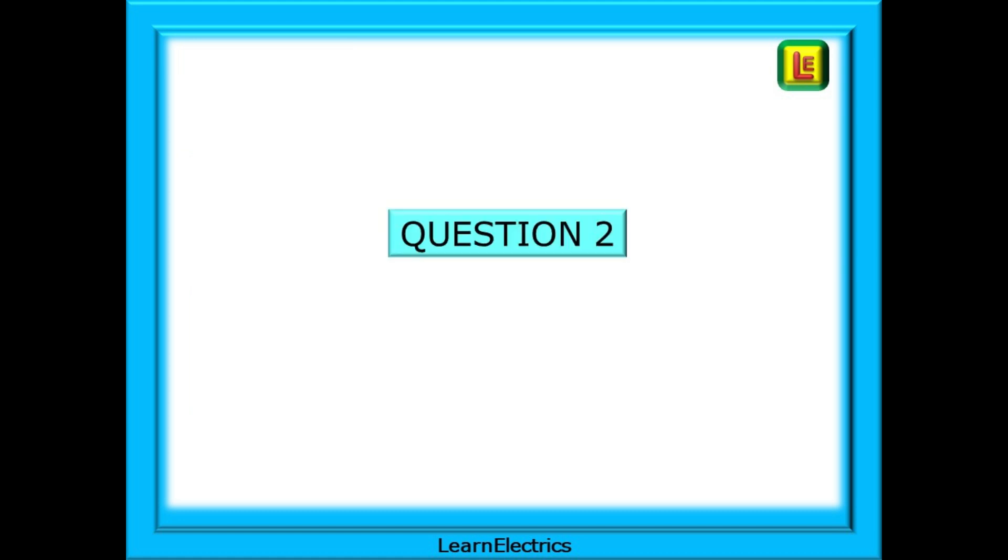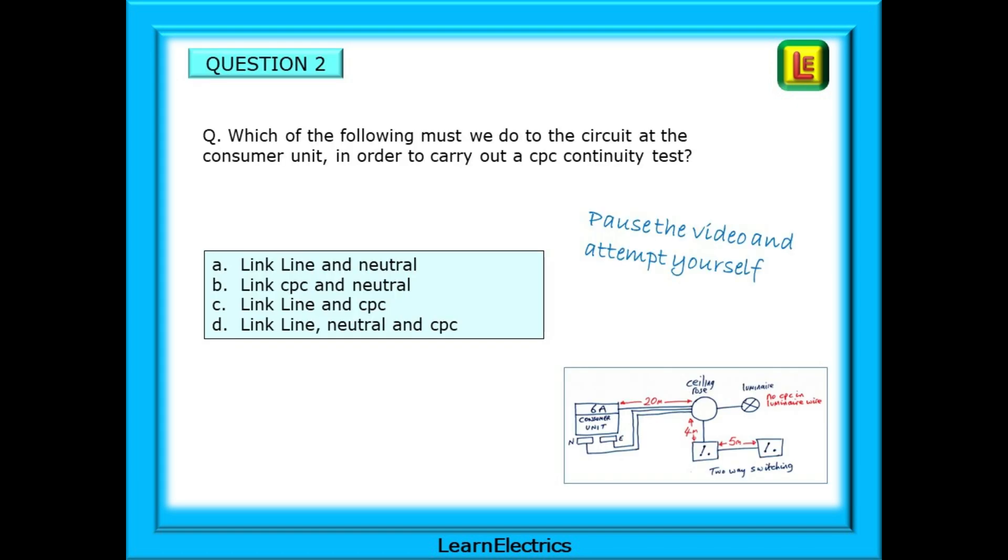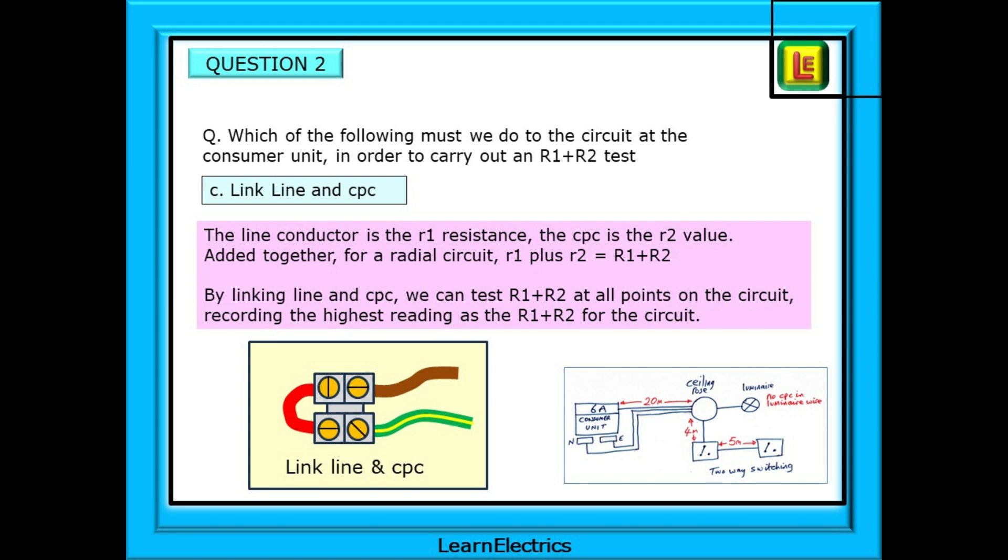On to question two now. The same scenario. The question asks which of the following must we do to the circuit at the consumer unit in order to carry out a CPC continuity test. Pause the video and choose an answer. The correct answer is answer C. We must link the line and CPC conductors together at the consumer unit. The line conductor is the little R1 resistance. The CPC is the little R2 value. Added together for a radial circuit little R1 plus little R2 equals big R1 plus R2.